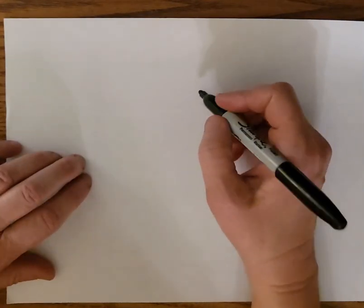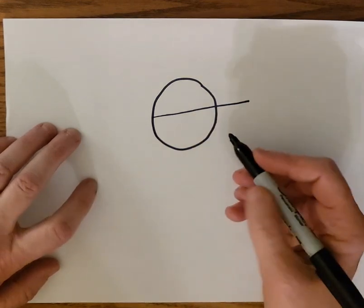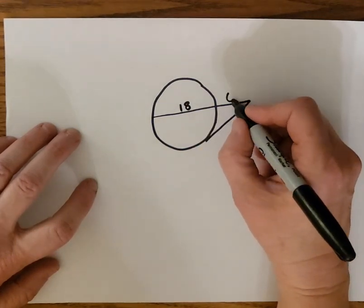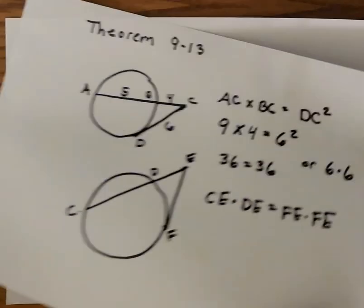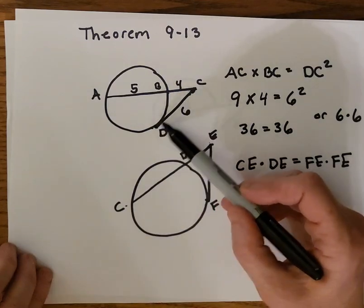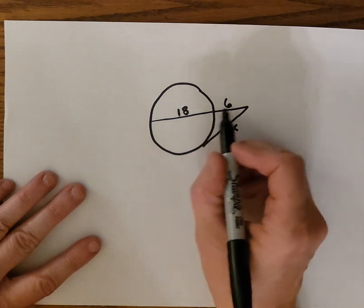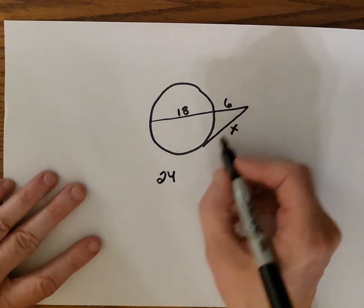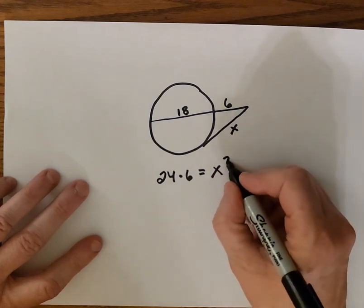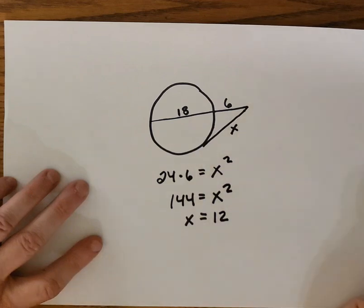Let's do one with the third theorem — a secant and a tangent. We have a secant, which is a chord extending beyond the circle, and a tangent that touches at only one point. This length is 18, this external part is 6, and this tangent is x. The entire secant AC, which is 18 plus 6 equals 24, multiplied by the external part 6, equals x squared. So 24 times 6 is 144, and x equals the square root of 144, which is 12.